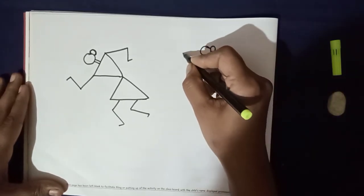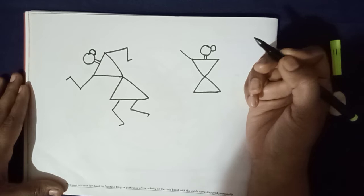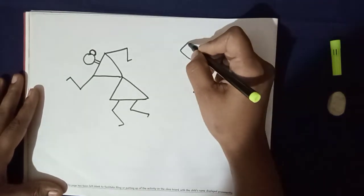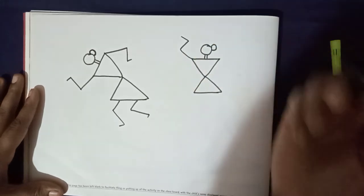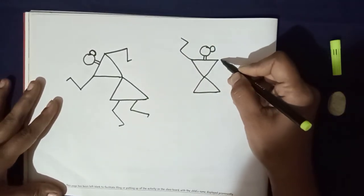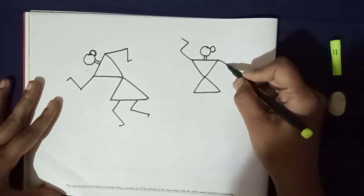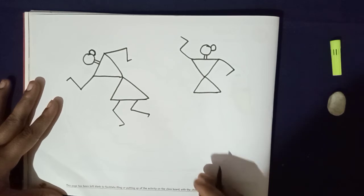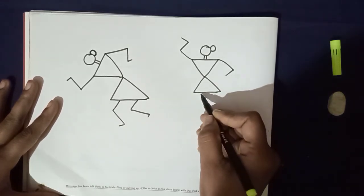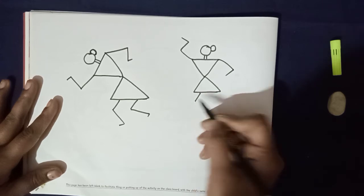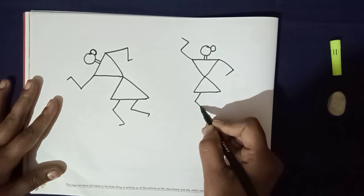One slanting line. Okay, again slanting line, and one. Again one small slanting line. Okay, and here in this corner we will draw one slanting line. Again one slanting line. Okay children.